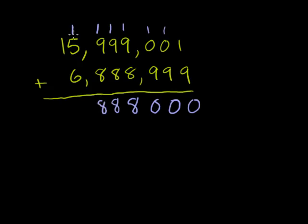Now we're in the millions place. 1 million plus 5 million is 6 million, plus 6 million is 12 million. Write the 2 million, and then carry the 1. Because 12 million is 2 million plus 10 million. This is one 10 million plus another one 10 million. That's 1 plus 1 is 2. And then we are done. 15,999,001 plus 6,888,999 is 22,888,000.